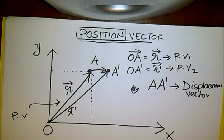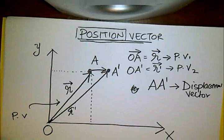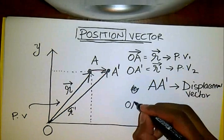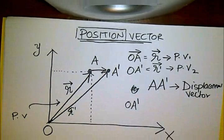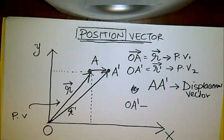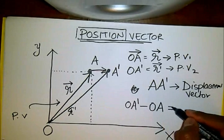And what it is, is actually our final position minus our initial position, right? That would give us the displacement. Final position minus initial position. So it works the same way to say that it is our final position vector minus our initial position vector.